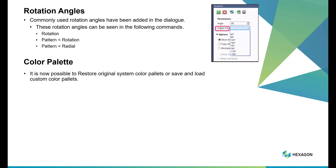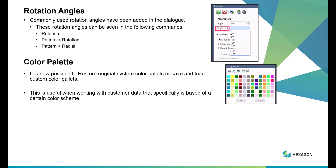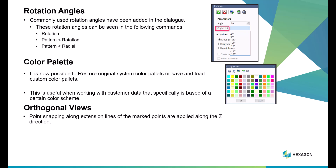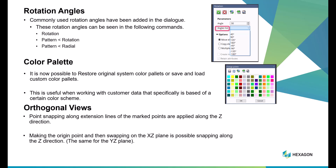Within Color Palette, it is now possible to restore the original color palettes on a save and load of a custom color palette, useful when working on customer data based on a certain color scheme. In an orthogonal view, you have the ability to do point snapping along an extension line to mark the appropriate Z direction. The marking of the origin point is also swapped to XZ plane and it is possible to snap along the Z direction — the same for the YZ plane. In previous versions, you always had to snap to the X or Y regardless of the plane.